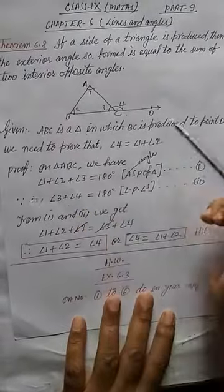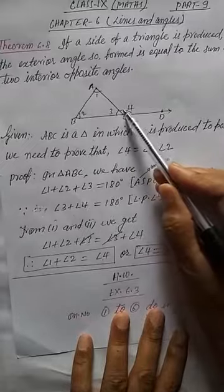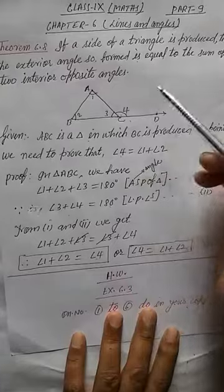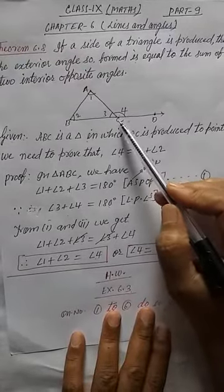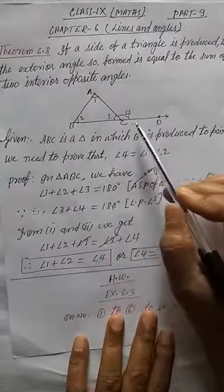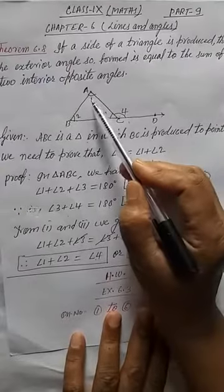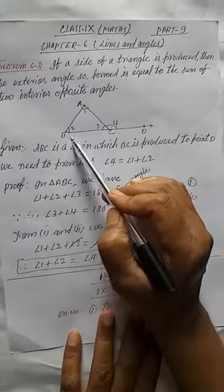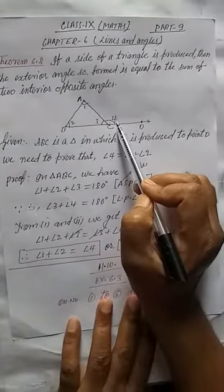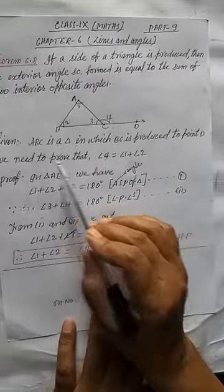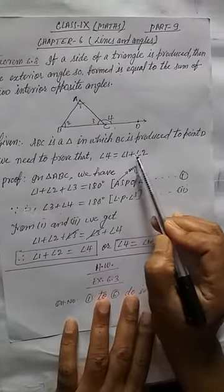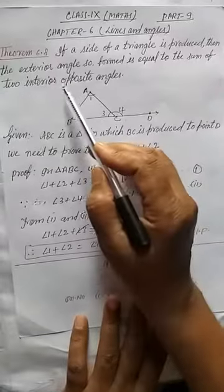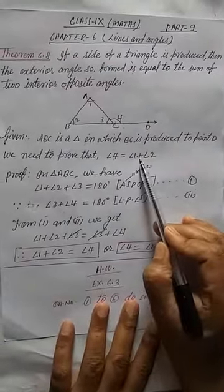Now, we need to prove that angle 4. So this angle 4 is the exterior angle of triangle ABC. Can you see what are the opposite interior angles of the exterior angle 4? Here angle 1 and here angle 2. So these are the interior opposite angles of angle 4. We need to prove that angle 4 is equal to angle 1 plus angle 2 because here we can write the sum of the two interior opposite angles. Sum means plus.